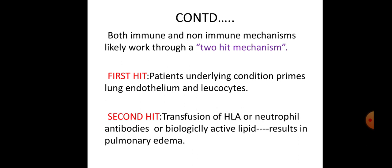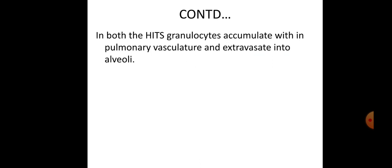Both immune and non-immune mechanisms likely work through a two-hit mechanism. The first hit is the patient's underlying conditions and comorbidities that prime the lung endothelium and leukocytes. The second hit is transfusion of HLA or neutrophil antibodies or biologically active lipids, resulting in pulmonary edema. In both hits, granulocytes accumulate within pulmonary vasculature and extravasate into the alveoli.